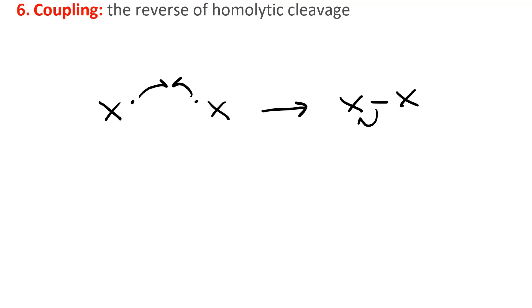Notice this is the only kind of mechanism where radicals are destroyed. And then, of course, running it backwards, you generate the radicals. On top, it's coupling. In reverse, it is cleavage.